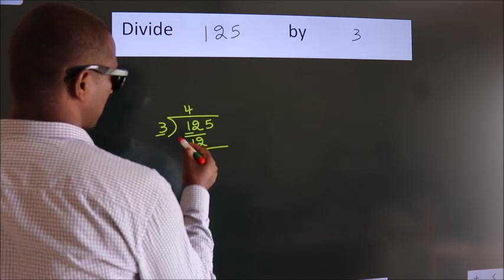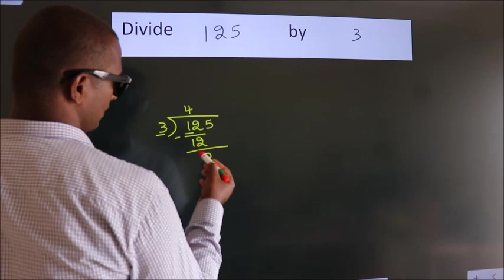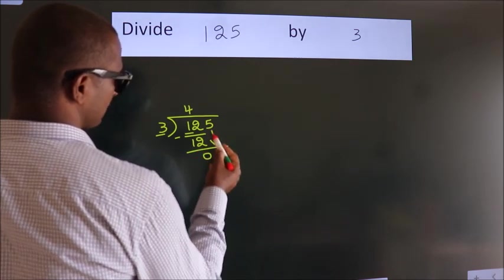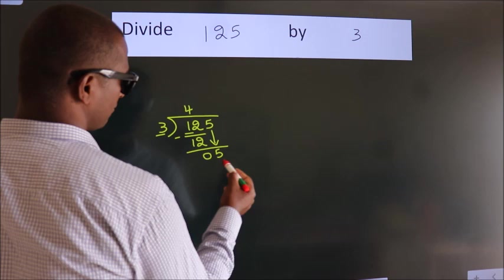Now we should subtract, we get 0. After this, bring down the beside number. So 5 down.